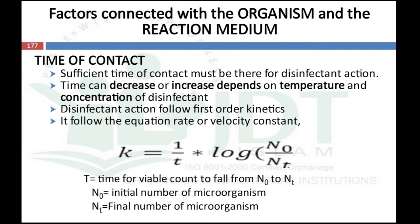The next factor is time of contact. Sufficient time of contact must be provided for disinfectant action in every case. Time can either decrease or increase depending on increases or decreases in temperature or concentration of the disinfectant. Disinfectant action usually follows first order kinetics and is given by the equation: k = (1/t) × log(N0/Nt), where N0 is the initial number of microorganisms, Nt is the final number, and t is the time required to reduce the viable count from N0 to Nt.